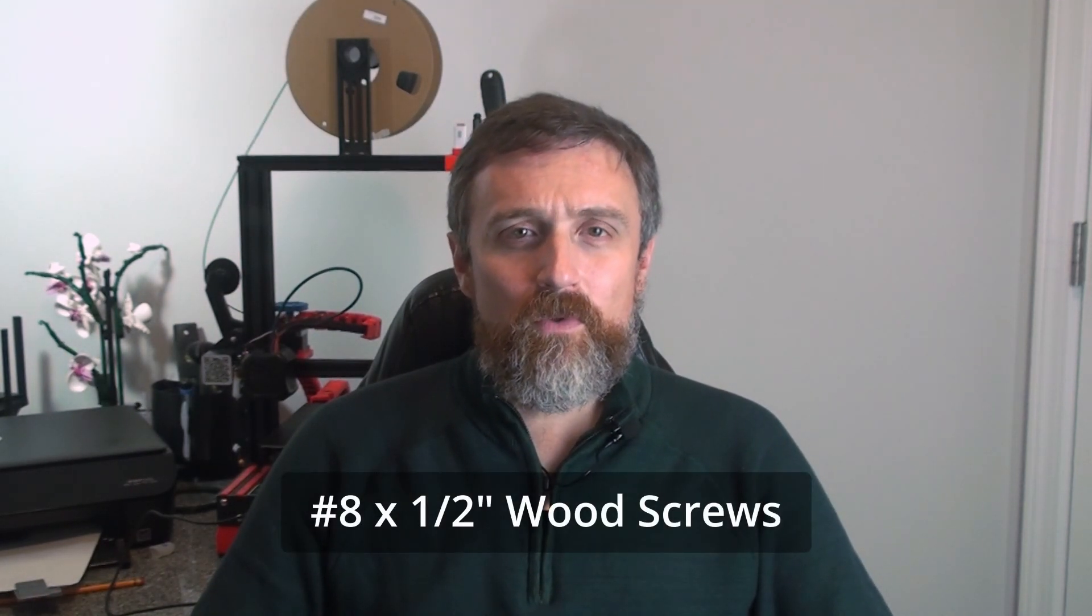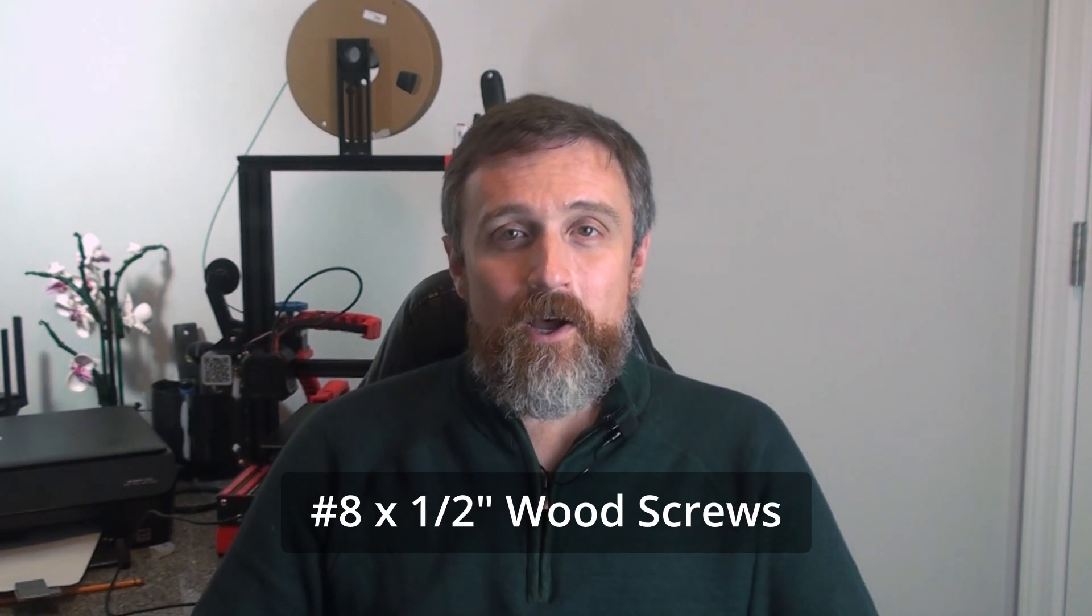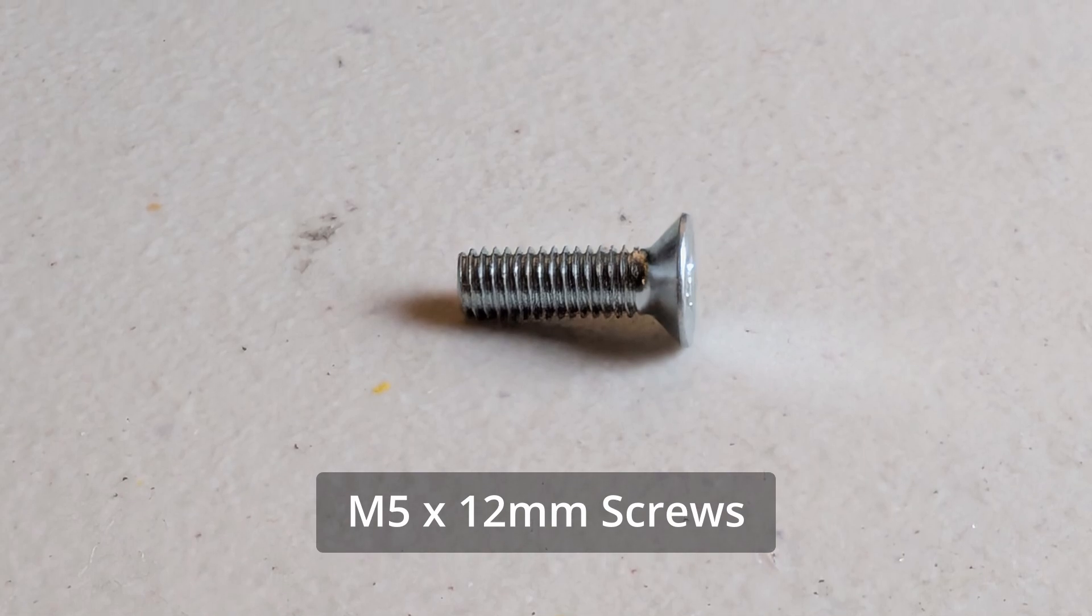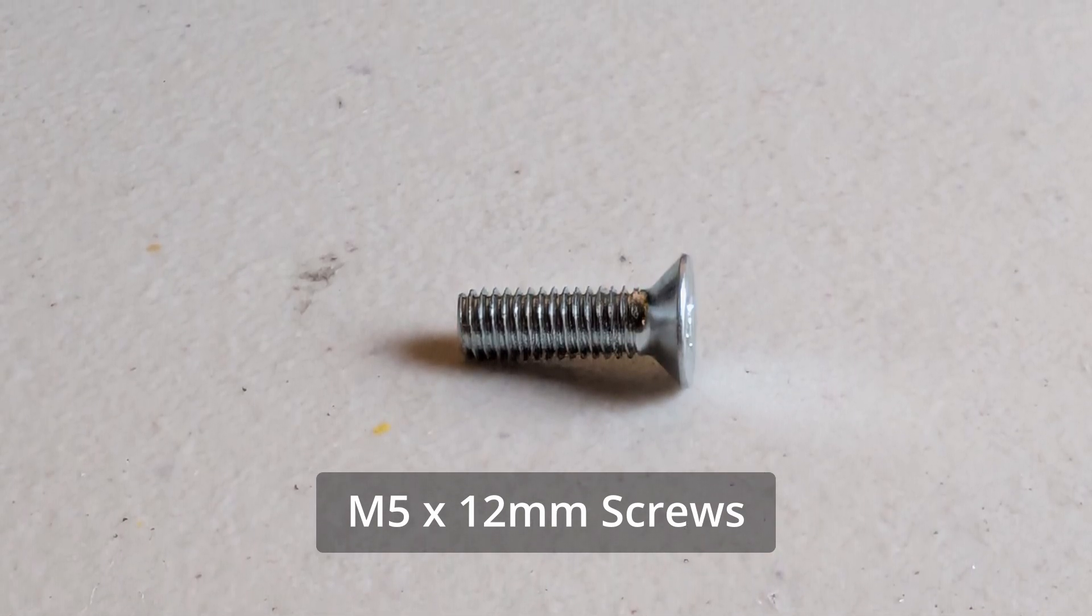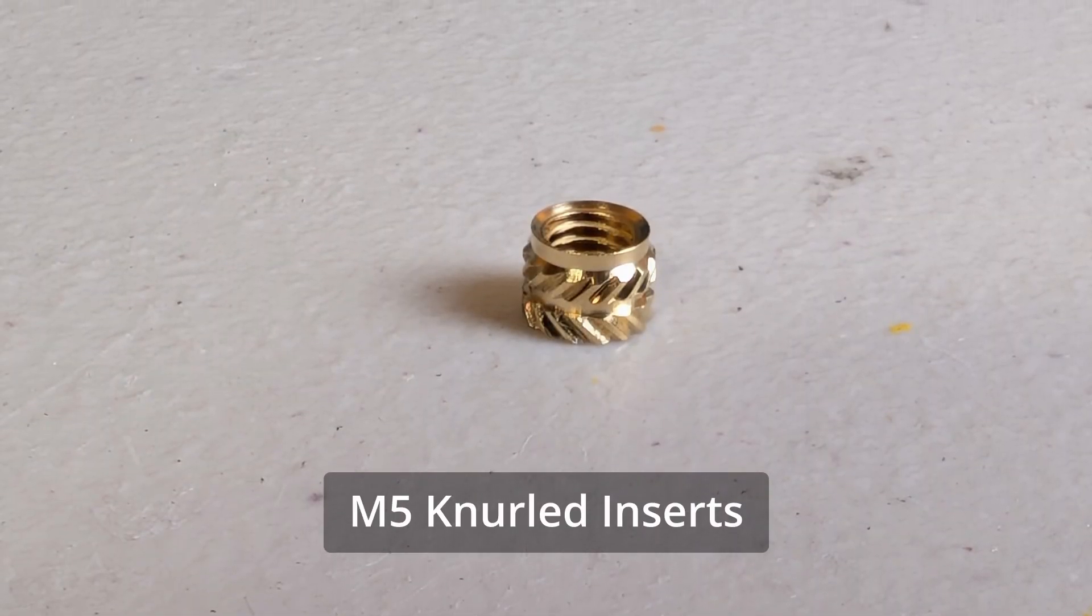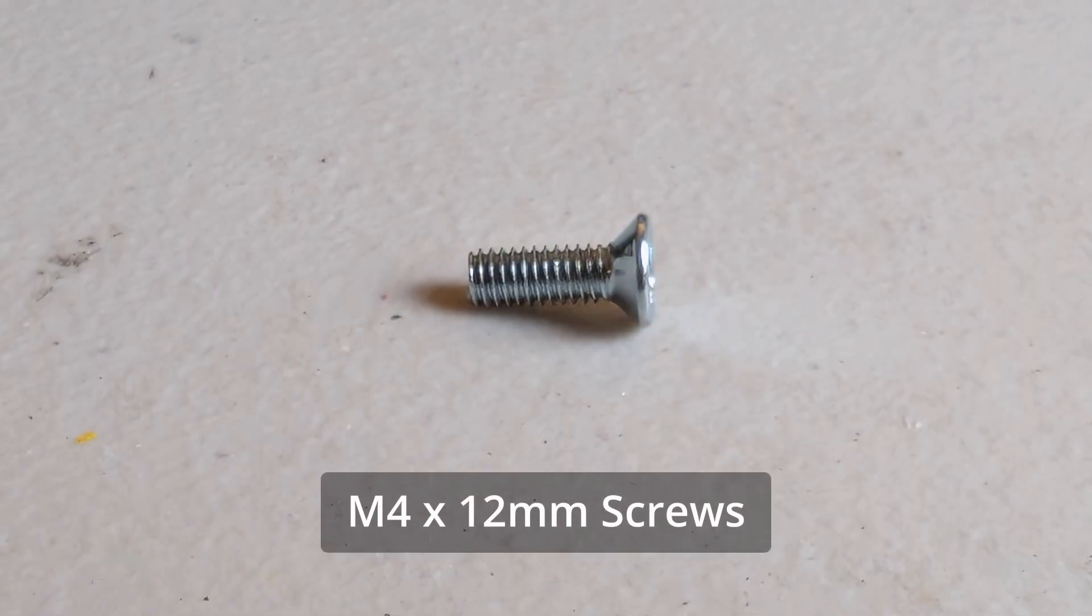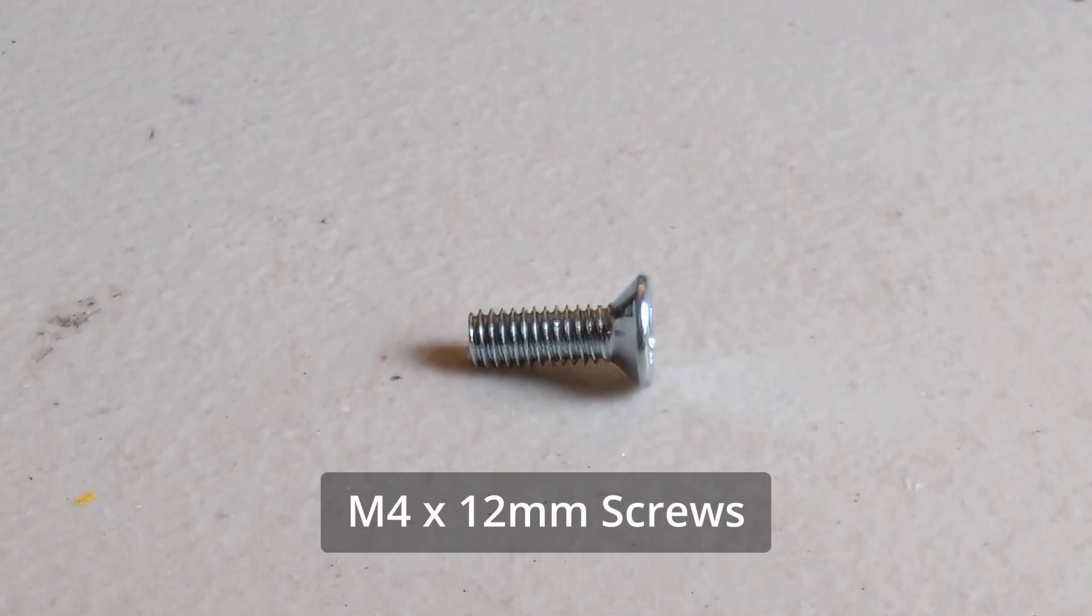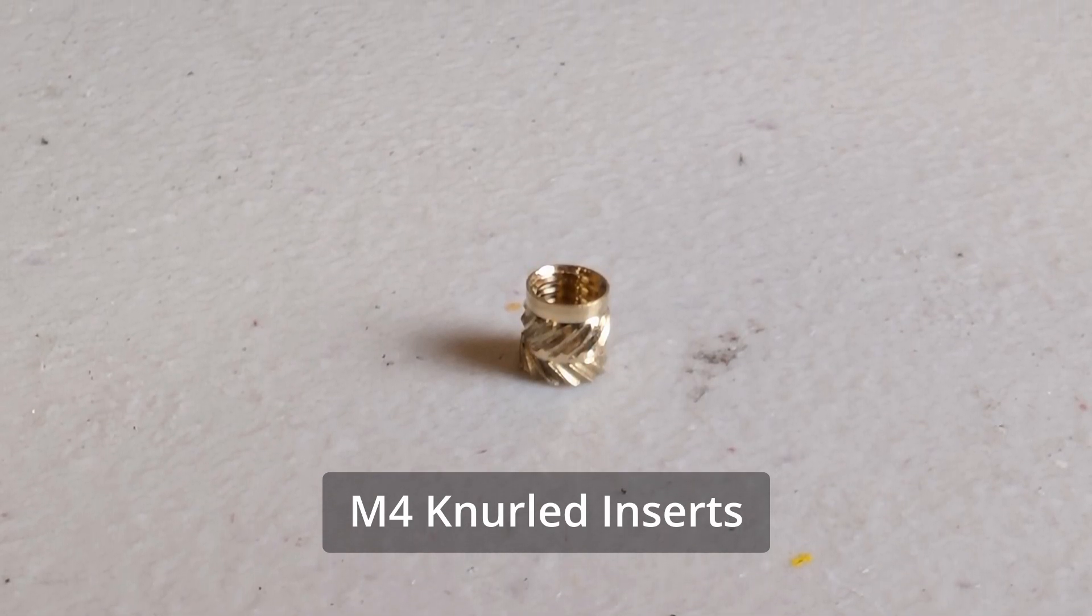You're going to need one 3 millimeter brass rod at 82 and a half millimeters for the pallet and the pendulum. You're also going to need another small piece of that 3 millimeter brass rod around 28-30 millimeters for the winding drum. You'll need three small wood screws. I think I went with number eights that are half inch in length.